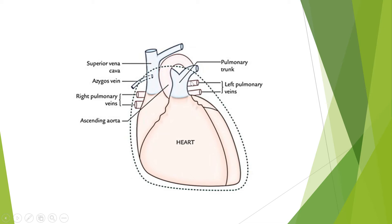These are veins because they drain blood into the heart. Although they carry oxygenated blood, they are shown in red. These pulmonary veins carry oxygenated blood and drain it into the left atrium of the heart. There will be four openings of the pulmonary veins in the left atrium. The left atrium is most commonly present on the posterior surface.